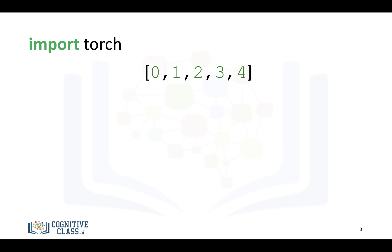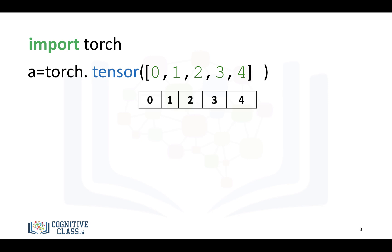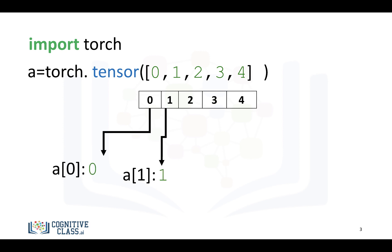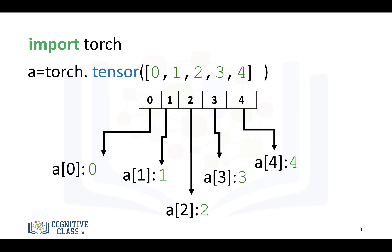Just like NumPy, we can import Torch and cast the following list to the tensor A. Just a note: all the elements within a tensor have to be the same data type. The indexing is as follows — we can access the first, second, and third element using the standard square brackets.